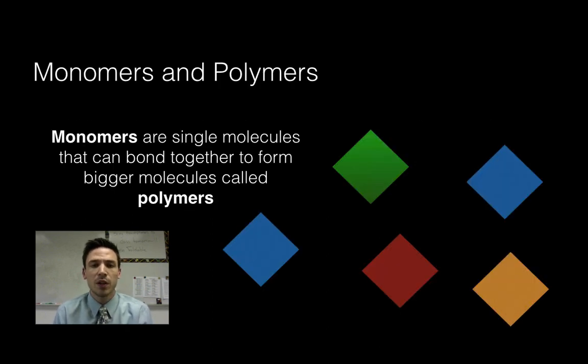First of all before we can talk about all the different macromolecules we got to understand about monomers and polymers. So a monomer is going to be a single molecule that can bond together with other monomers to form bigger molecules called polymers. Macromolecules are polymers and they are each formed by different smaller subunits called monomers.